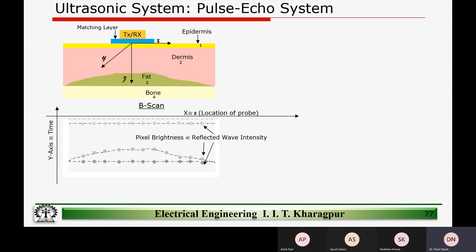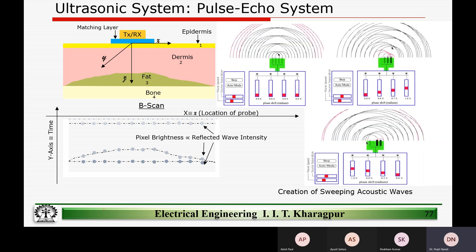This is called a B-scan. The problem with B-scan is that physically moving the ultrasound transducer along the body causes friction and is very painful for the patient. To solve this, we use something called a phased array — an array of transducers used to mimic the movement of the transducer along the body.